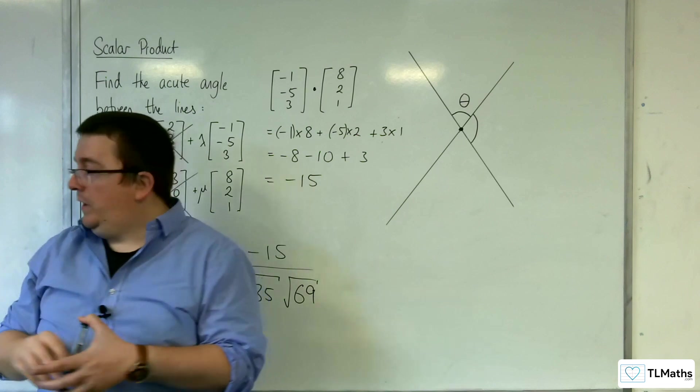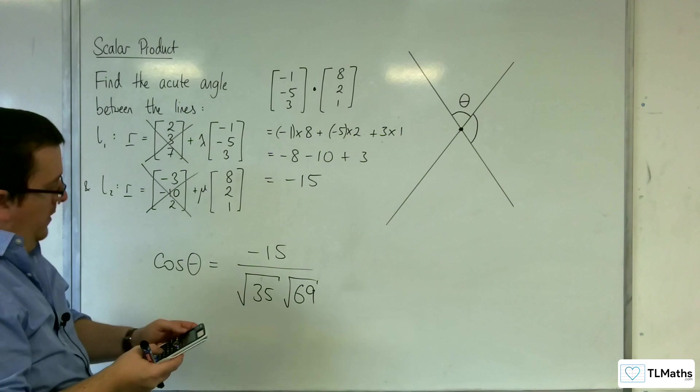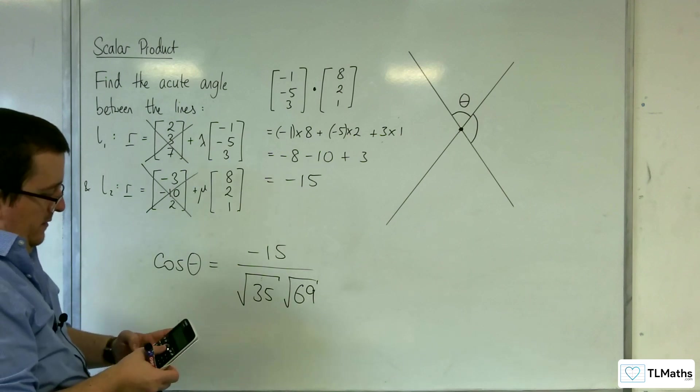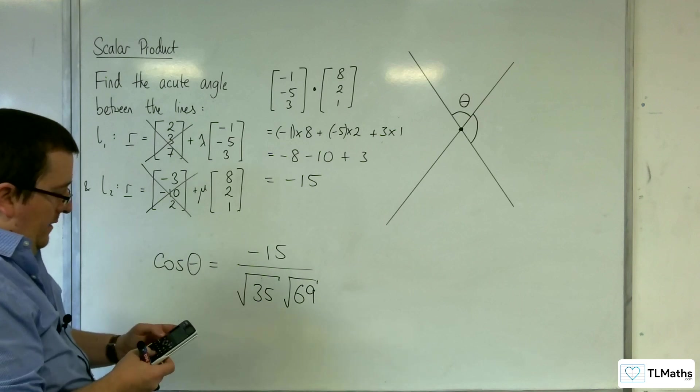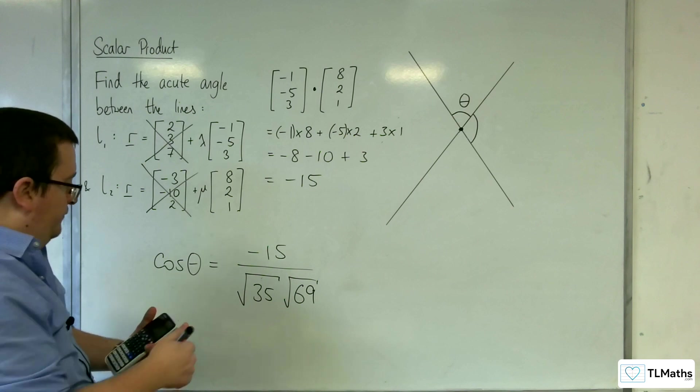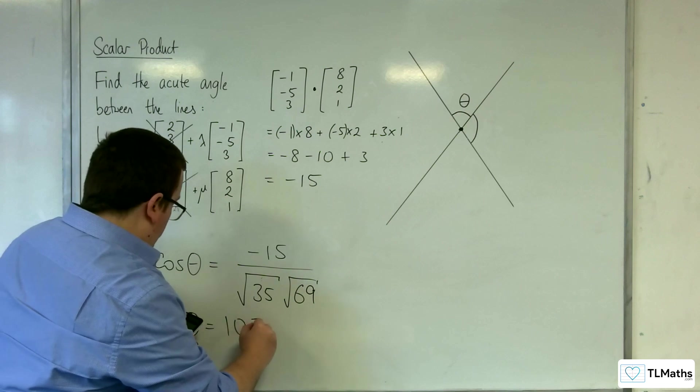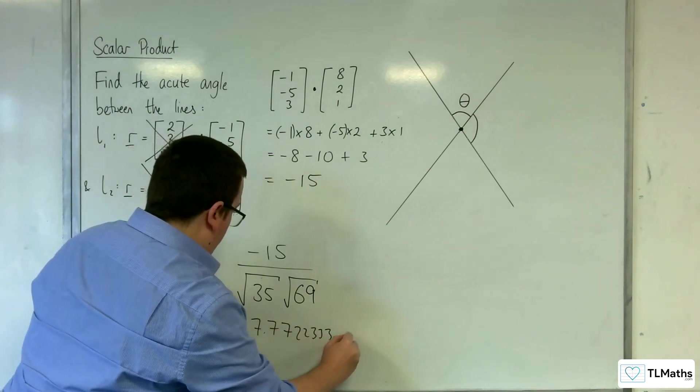So then I can just plug that into my calculator. So minus 15 divided by the square root of 35 times by the square root of 69, and then inverse cosine of that. And we get theta is 107.772 degrees.